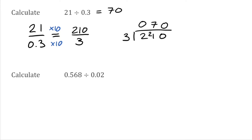So that's the simple trick we can use when we're dividing by decimals — we want to find an equivalent fraction where we're actually dividing by a whole number. The numerator can still be a decimal, that's fine, but we want to be dividing by a whole number.